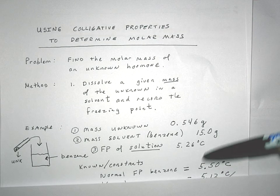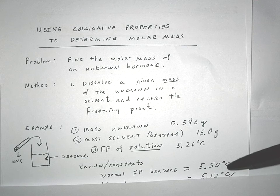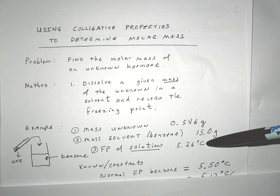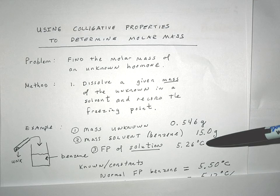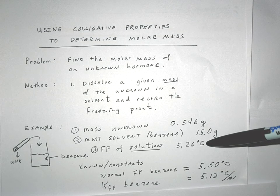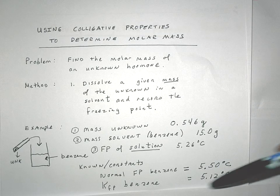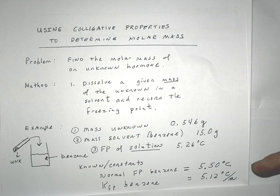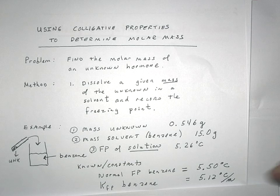We look up the normal freezing point of benzene and find that it's 5.50. So indeed, the freezing point was lowered by the addition of a solute, and that's one of the properties that we have learned. We look up the freezing point constant, the KFP for benzene, as shown here. And we're going to need all these values in our calculation.